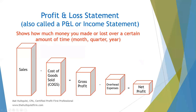Let's get into a basic profit and loss statement. You might hear this called many things — some people call it a P&L or an income statement. It's all the same thing. The profit and loss simply shows you how much money you made or lost over a certain amount of time — that could be a month, a quarter, a year. Any certain amount of time, you either made or lost money, and that's all the profit and loss statement shows you.